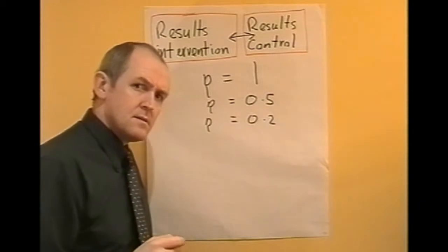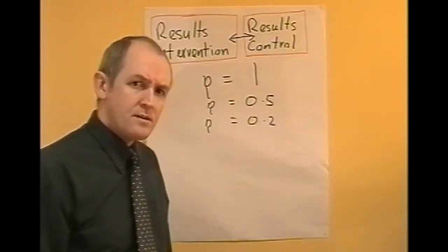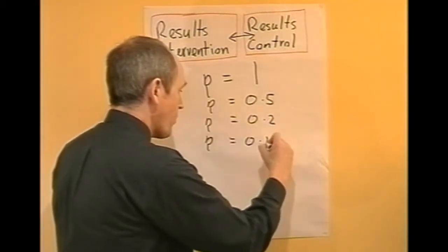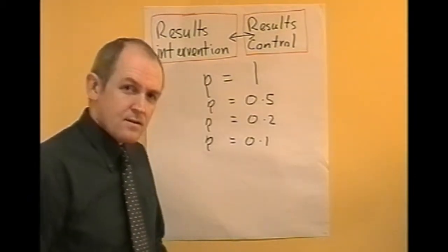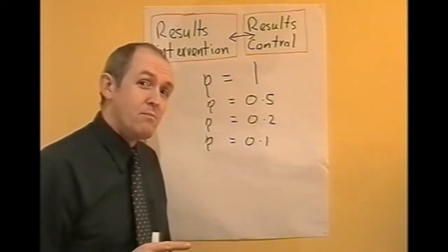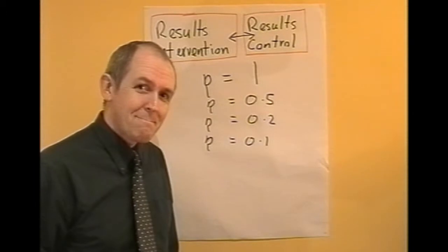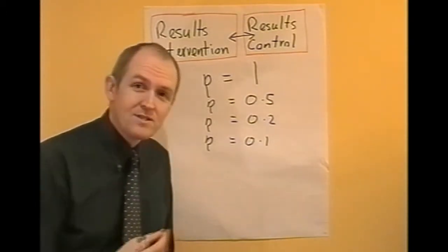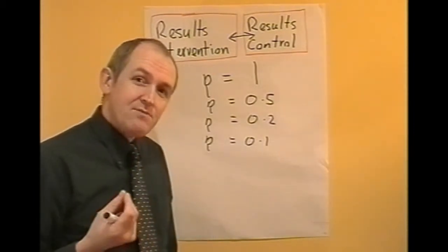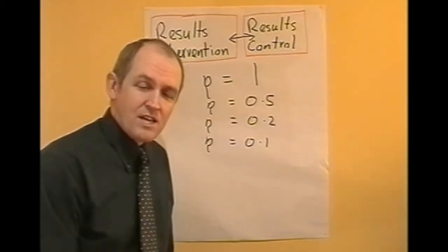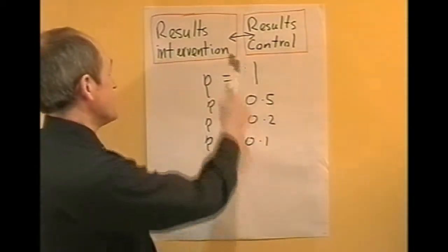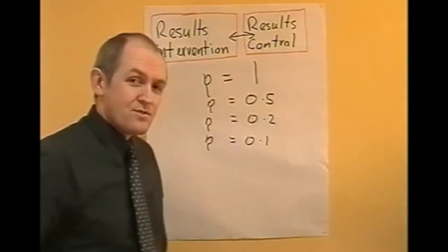Are you satisfied with 80%? What about p equals 0.1? That means there's only a 10% probability that the result arose by chance. In other words, the researcher is now 90% sure that the result is genuine, that it did not arise by chance — 90% sure that there is a genuine difference between the results from the intervention group and the results from the control group.